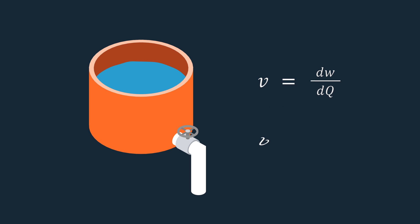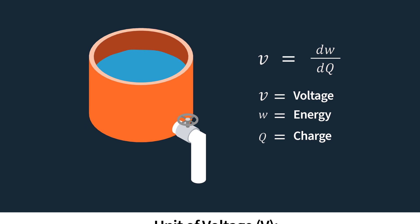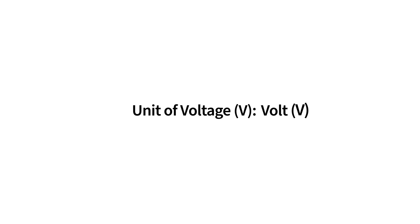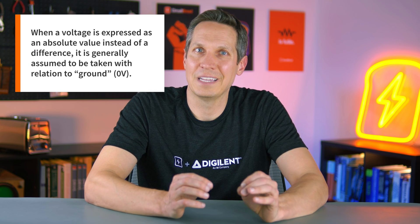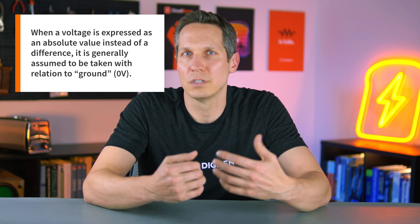Mathematically, this is expressed as V equals dW over dQ, where V is the voltage difference, W is the energy, Q is the charge, and the differentials dW and dQ represent the change in energy and charge between two points in space. Voltage is represented by the letter V and is measured in volts, denoted by an uppercase V. In electrical circuits, we often care about voltage differences between two points rather than the absolute voltage, as this difference drives the flow of electric charges. When a voltage is expressed as an absolute value, it is generally assumed to be taken with relation to ground, or zero volts.